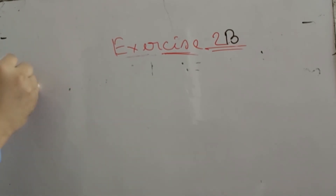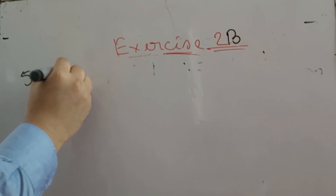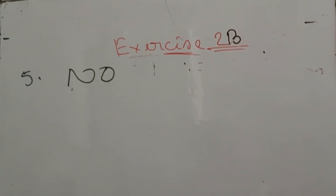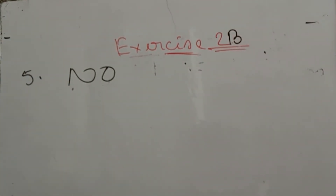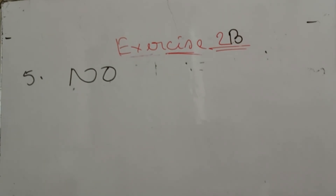Now number 5: can a prime number end with the figure 6? Big no. Why? Because 6 is not a prime number. Since 6 is not a prime, any number ending with the figure 6 cannot be a prime number. Very simple problem.